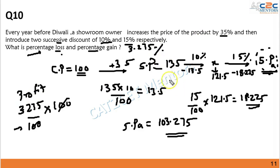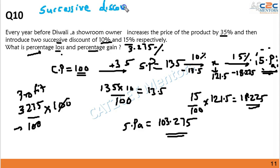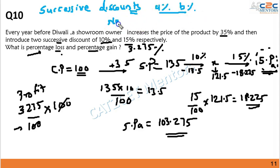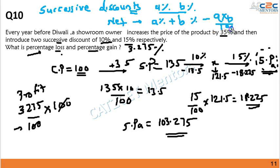Now this is the traditional approach. There is a shortcut for successive discounts: whenever there are two successive discounts of a% and b%, the net effect is given by the formula: a + b − (a × b)/100.